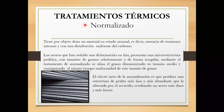Con el proceso normalizado dejamos todo anulado. Además, distribuye de forma uniforme el carbono, porque cuando calentamos una pieza de manera superficial, el carbono tiende a irse a un lado y organizarse de cierta manera. En cambio, con el normalizado dejamos el carbono distribuido de la misma manera en toda la pieza.